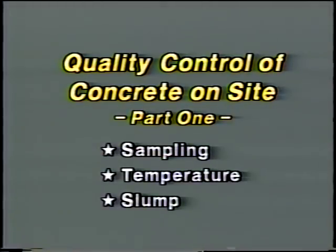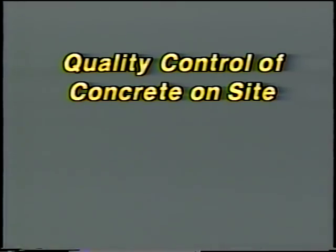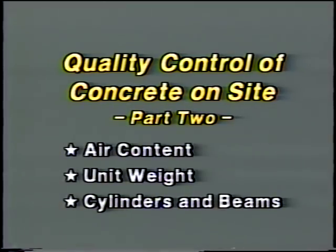And that's sampling, temperature, and slump — and the end of part one. In part two, we'll cover air content, unit weight, and the making of cylinders and beams.